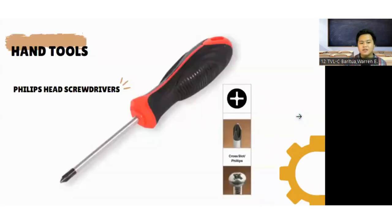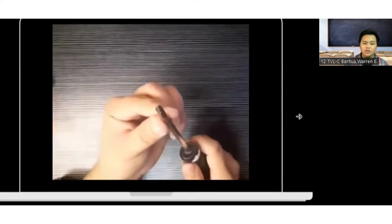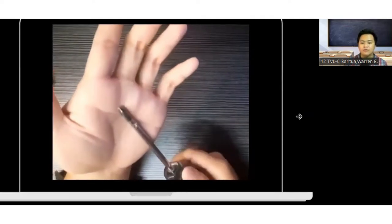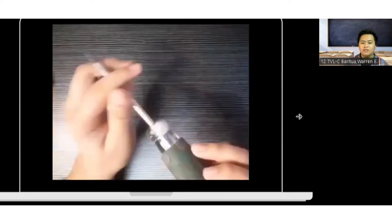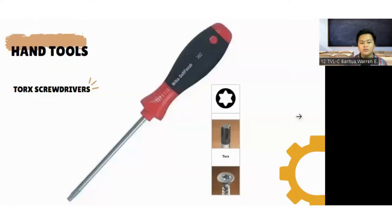Next are Phillips screwdrivers, with Phillips heads which have a cross-shaped recess. The alternate name is a cross screwdriver. They were invented to cope with higher torsion. The next one is a torque screwdriver.